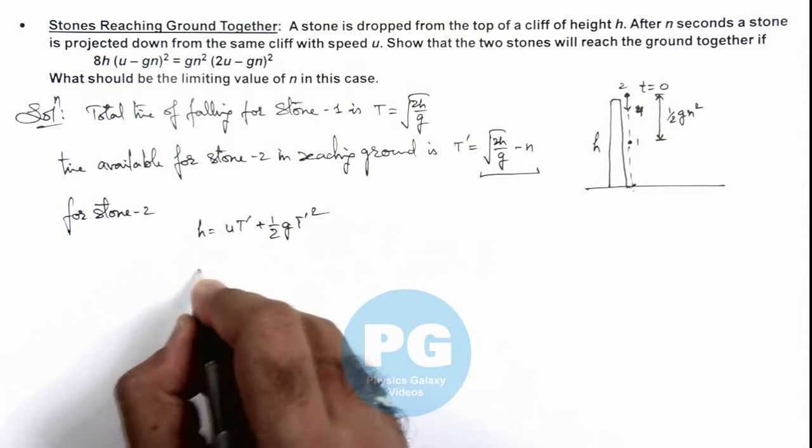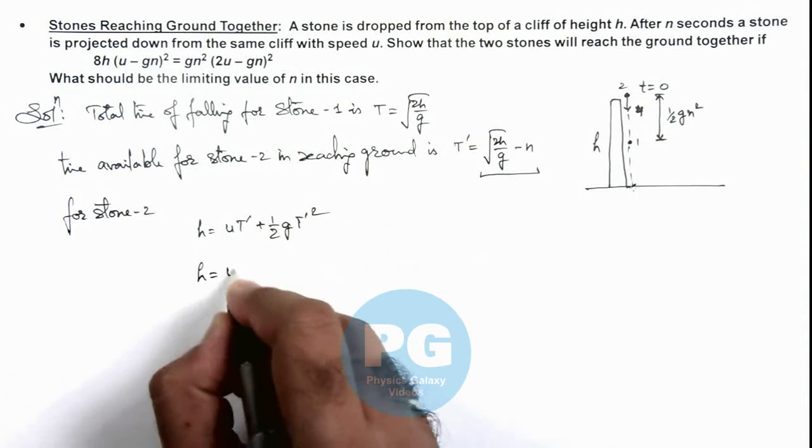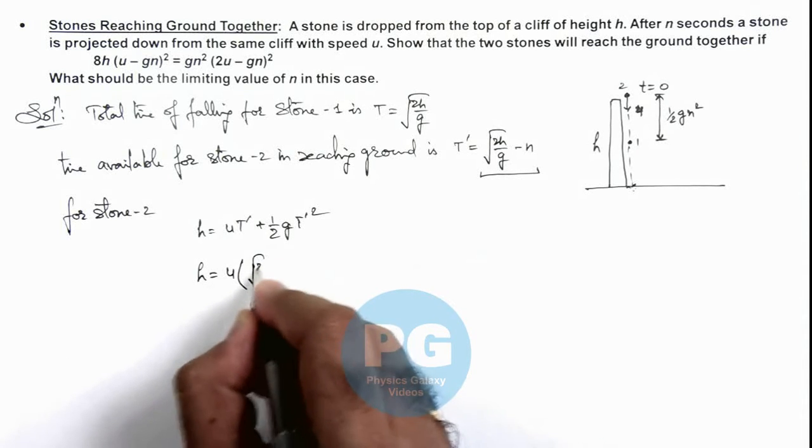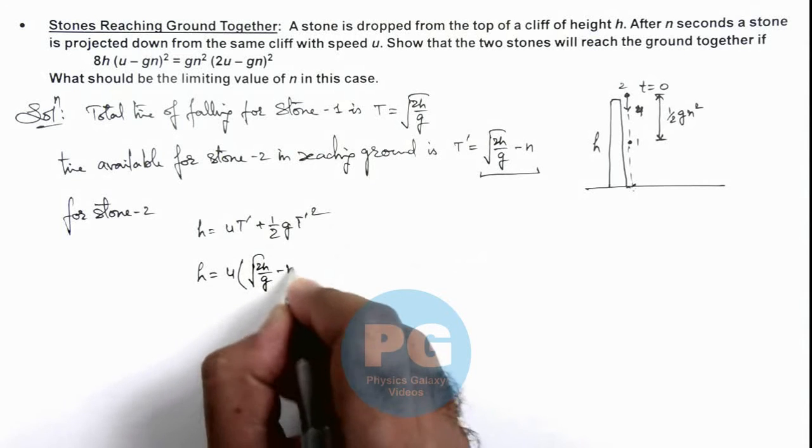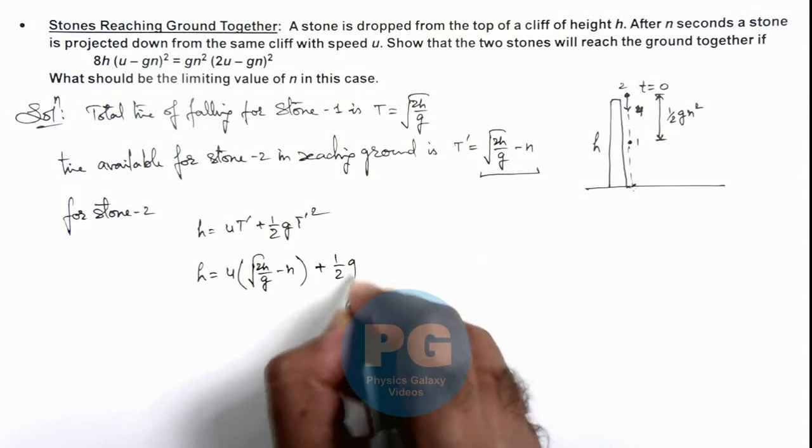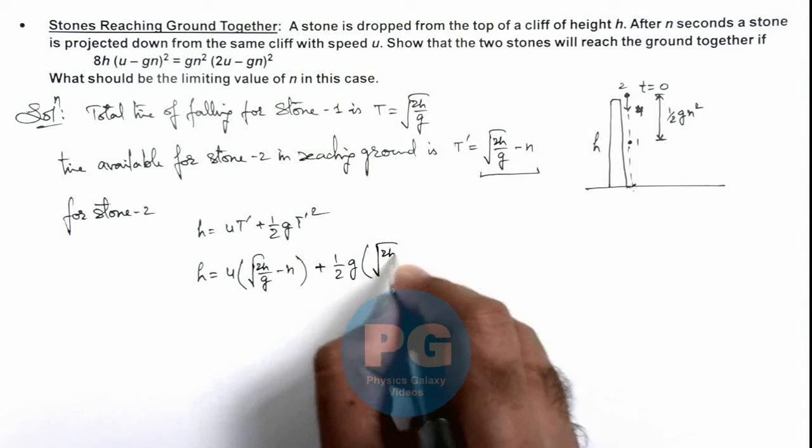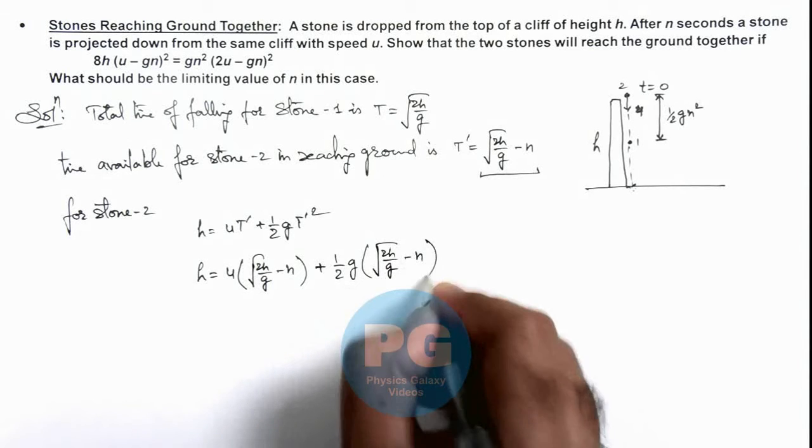We put it here: h is equal to u times root 2h by g minus n, plus half g multiplied by root 2h by g minus n whole square.